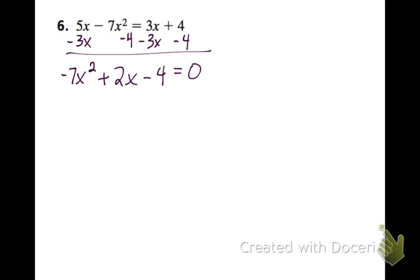It's very important to put that negative 7x squared first because that's our a value. And if you had this out of order, you might think that a was a different number. So we have negative 7 is a, 2 is b, negative 4 is c.